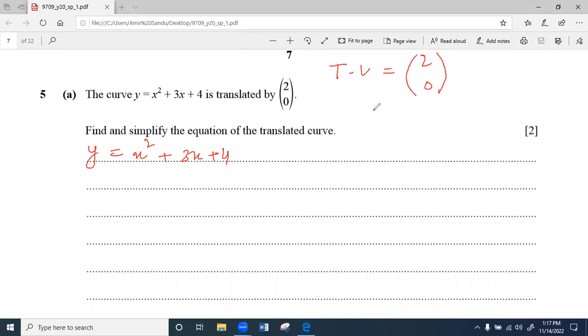So because here x is plus 2, that means original curve is translated 2 units in positive x direction. So x will be replaced by x minus 2. In case x is negative, then x will be replaced by x plus 2. Because here y is 0, y component 0, that means there is no change in y direction.